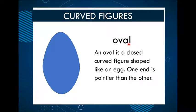An oval. An oval is a closed curved figure shaped like an egg. One end is pointier than the other. Doesn't it look like an egg?